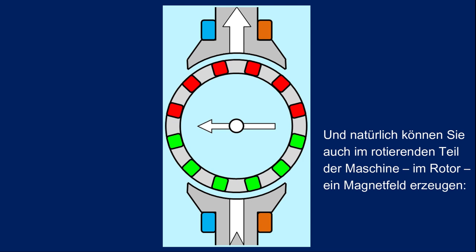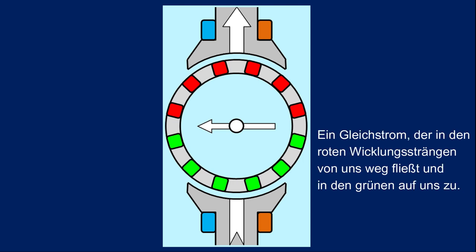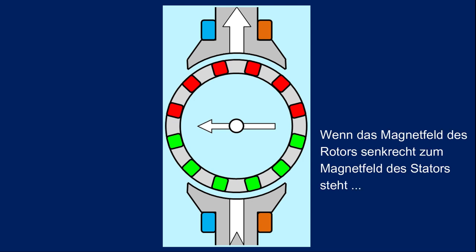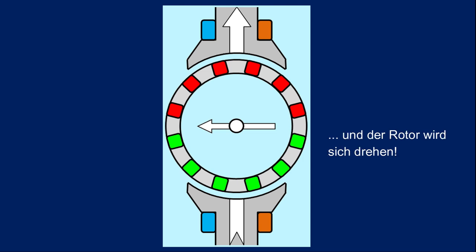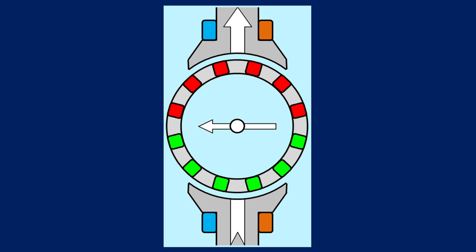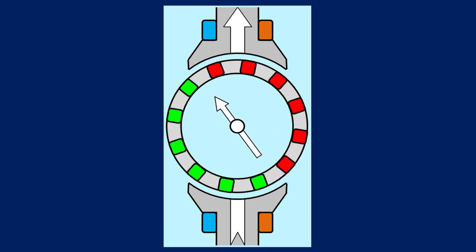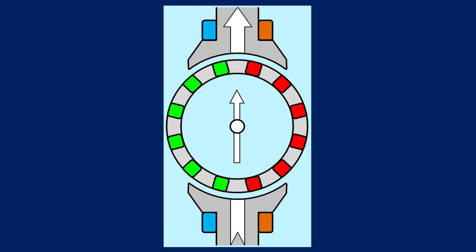And of course you can also create a magnetic field in the rotating part of the machine, in the rotor. A direct current flowing away from us in the red winding strands and towards us in the green winding strands. If there is a right angle between the magnetic field of the rotor and one of the stator, you get a maximum torque trying to align the two fields as the rotor will turn. But then it will stop. That's not what we want.